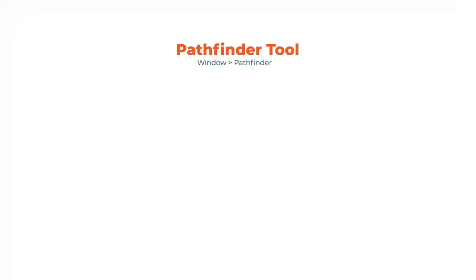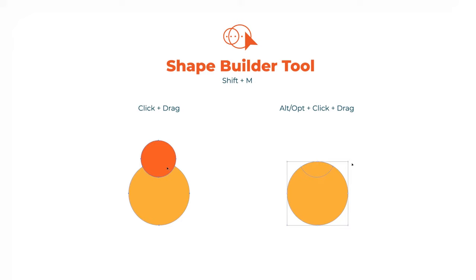For combinations, you can use the Pathfinder tool, in which you can unite, subtract, intersect, and exclude. I prefer using the Shape Builder tool because it has slightly better control than the Pathfinder tool, and also due to personal preference.